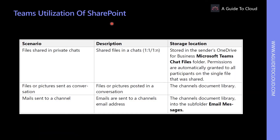Let's understand Teams utilization of SharePoint. Teams not only supports the manual upload of files to its document library, it also supports storing the following resources in SharePoint Online and OneDrive for Business. Files shared in private chats are stored in the sender's OneDrive for Business. Pictures and files sent as a conversation will be in the channel's document library. Any email sent to the channel is going to be in the subfolder called Email Messages.